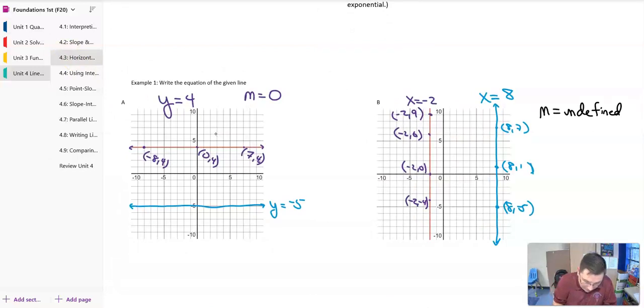If our line crosses the y-axis, it is going to be y equals the value where it crosses that axis. If it's crossing the x-axis, like a vertical line here, then it's x equals whatever value that is. So x equals negative 2, or x equals positive 8. So again, horizontal lines, y equals number. Vertical line, x equals number. Because it's crossing that axis. Don't get confused on which way those go.